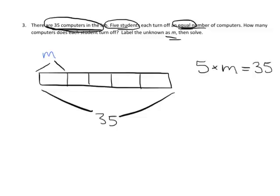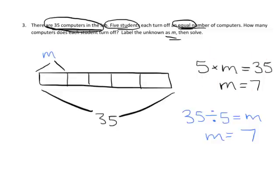Solving it, I would say: five times what equals 35? I count by fives — 5, 10, 15, 20, 25, 30, 35 — the answer is 7. So M is equal to 7. The other way you could have recorded it is as a division problem: 35 ÷ 5 = M. You do the math and you get M is equal to 7. So either one of these techniques would have worked, and this is basically how the tape diagram would look.